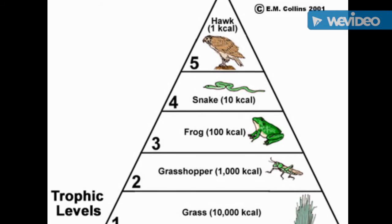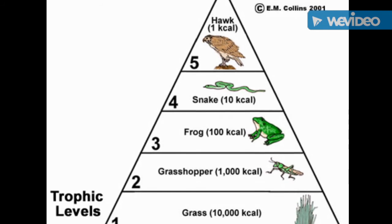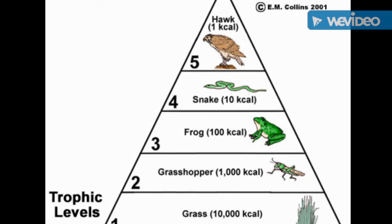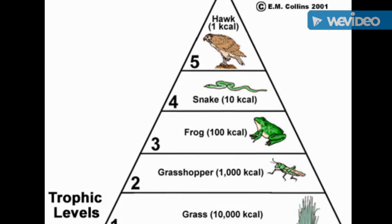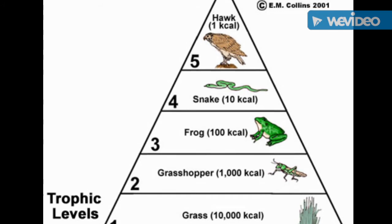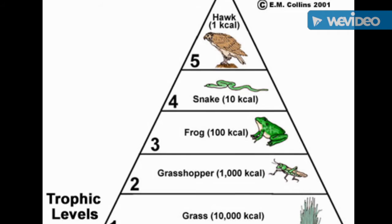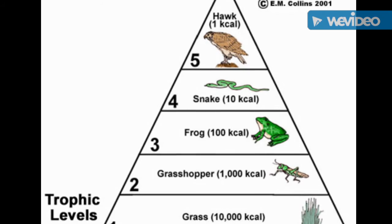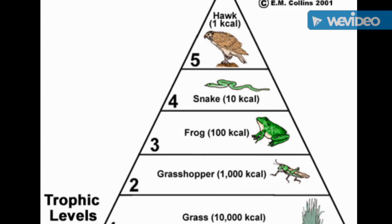Then you have your primary consumers, which are largely herbivores, that eat the producers. Then you have your secondary consumers, which are largely carnivores, that consume the primary consumers.